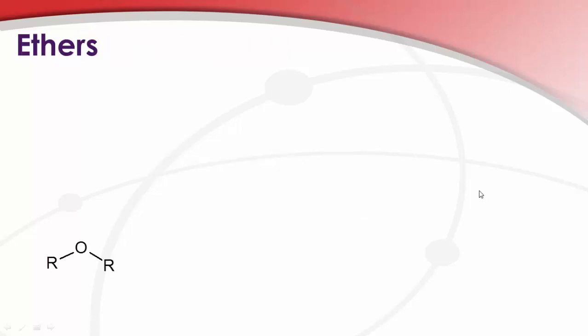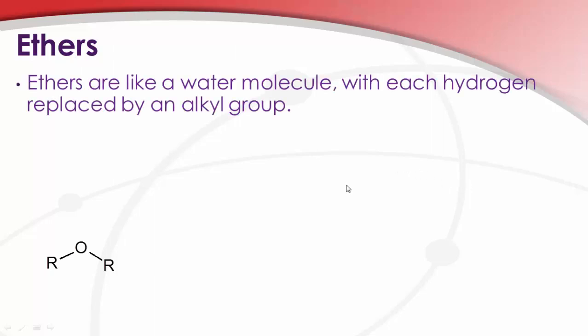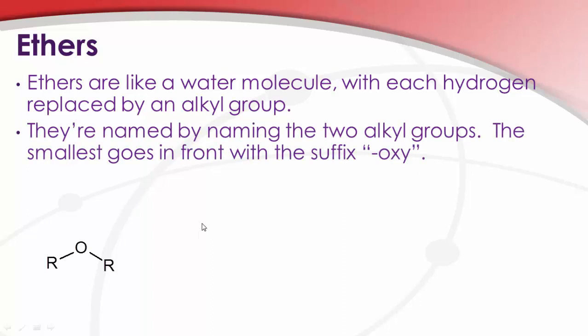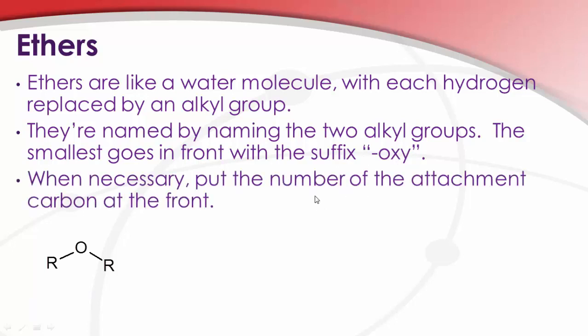So ethers are a related kind of compound. One way of looking at them is they're like esters without a carbonyl. But we'll look at them as more like a water molecule that has each hydrogen replaced by some kind of a carbon chain. Now we name them by simply identifying the two alkyl groups. The smallest goes in front with the suffix oxy. And where necessary, will give the number of the attachment carbon as well.